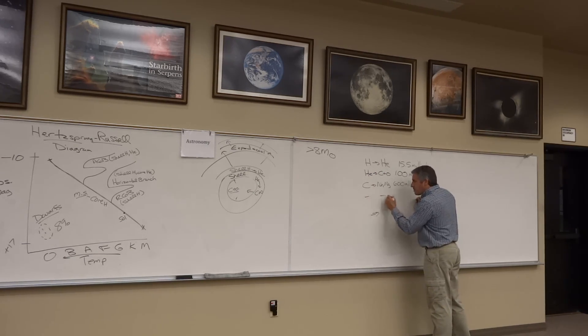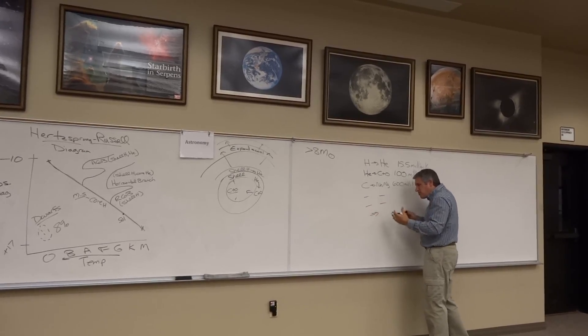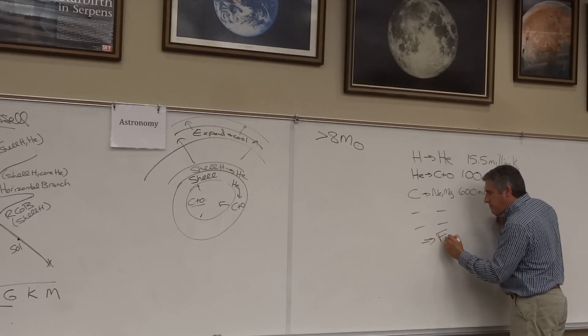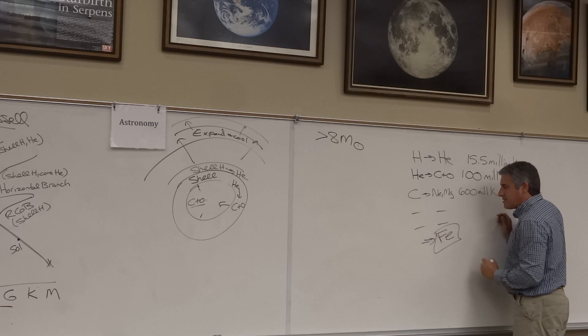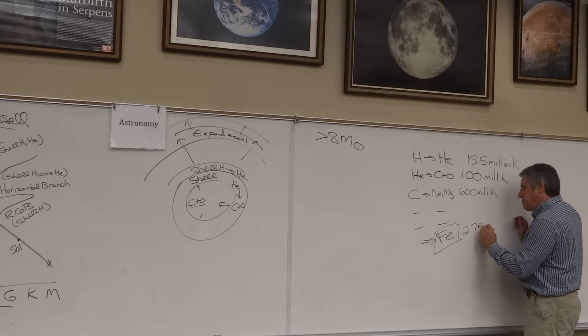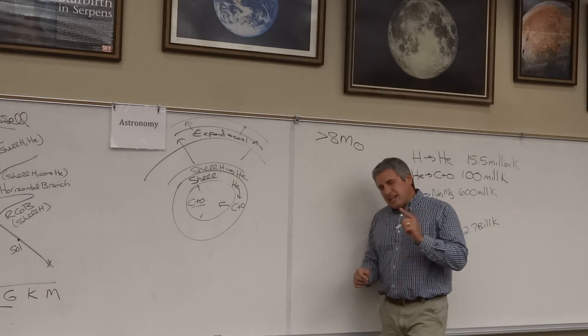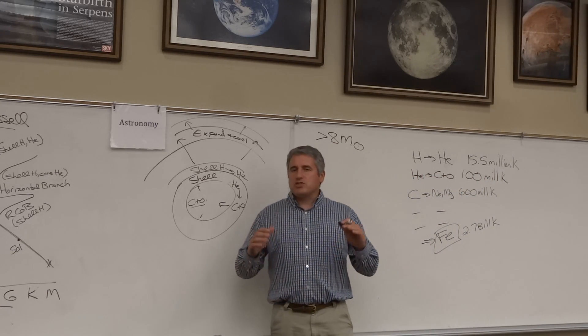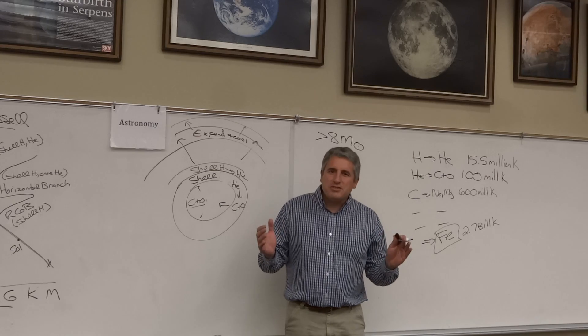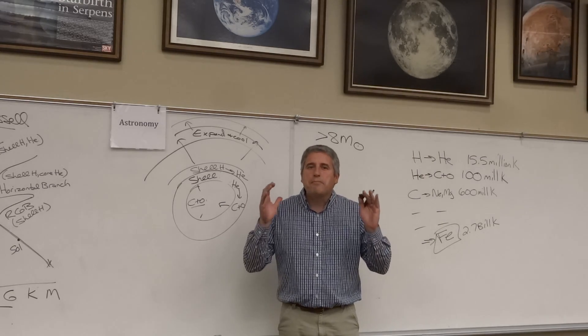So they burn higher and higher, bigger and bigger elements until eventually they burn into element number 26, iron, at a temperature of 2.7 billion Kelvin. And just like electron degeneracy pressure is the problem for small stars, in the case of big stars, iron is a problem.